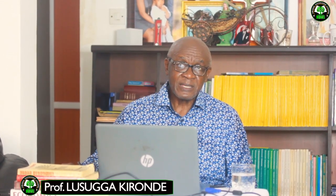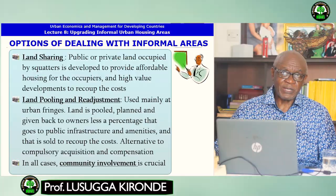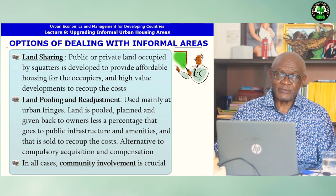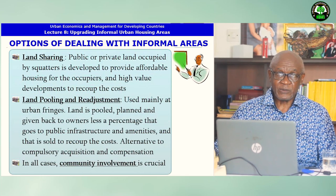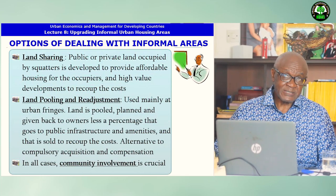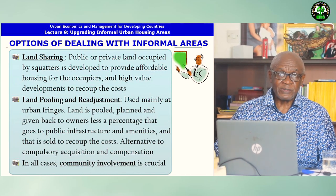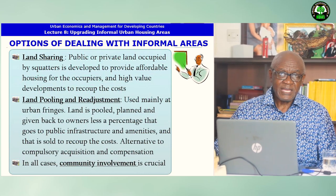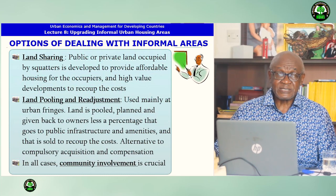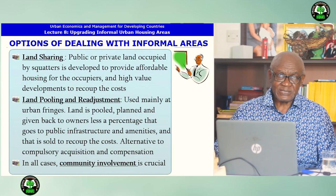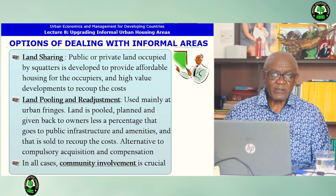Other options include land sharing, where the public or private land occupied by squatters is developed to provide affordable housing for the occupiers and high-value developments to recoup the costs. Land pooling and adjustment is used mainly at urban fringes, where land is pooled, planned, and given back to the owners less a percentage that goes to public infrastructure and amenities, and that is sold to recoup the costs. This is an alternative to compulsory acquisition and compensation. In all cases, community involvement is crucial.